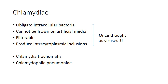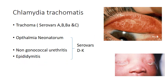We would be discussing two organisms of this family. The first is Chlamydia trachomatis and the second is Chlamydophila pneumoniae. Chlamydia trachomatis is primarily a human pathogen causing ocular, urogenital and neonatal infections.